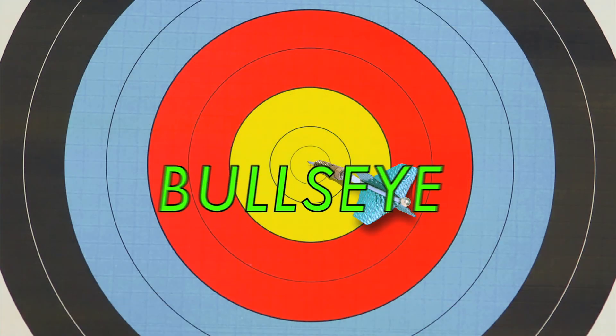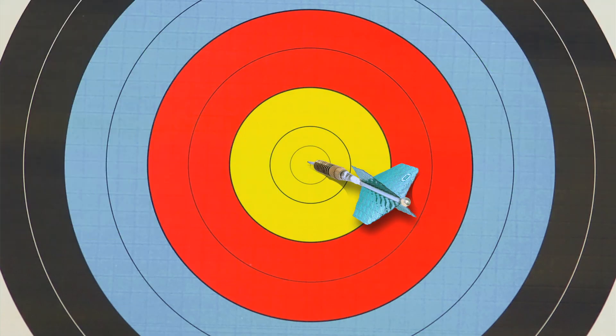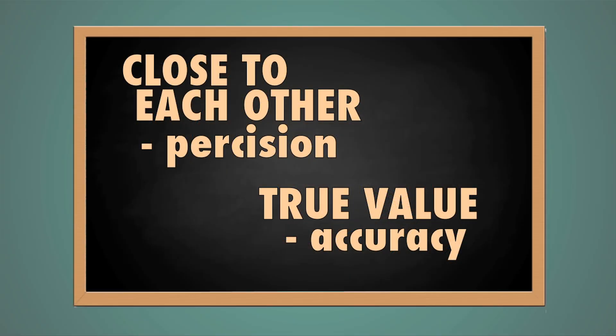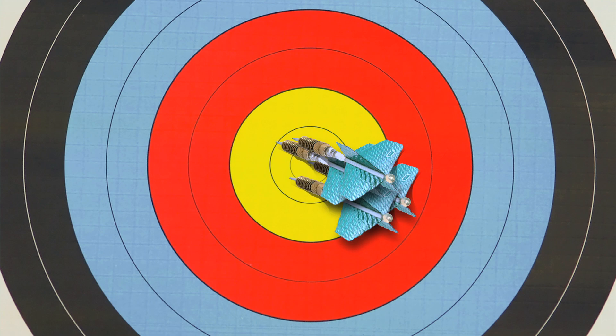Replication improves accuracy, while repetition improves precision. Accuracy is how close the measurement is to the true value, and precision is how close the measurements are to each other.